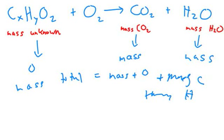Hopefully that makes sense. My writing is not very good right now. So anyways, total mass is the mass of O plus the mass of C plus the mass of H. If you have the mass of C and the mass of H, you can find the mass of O.